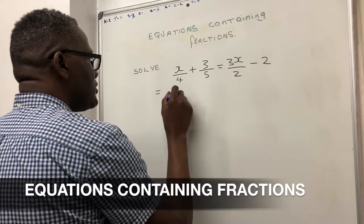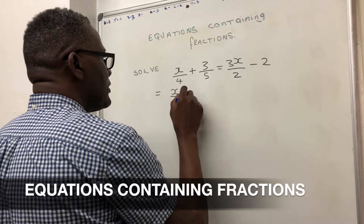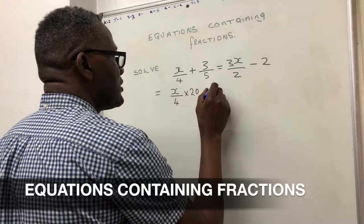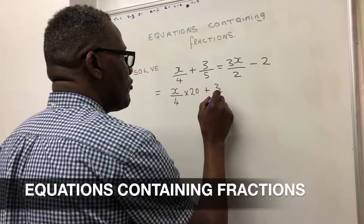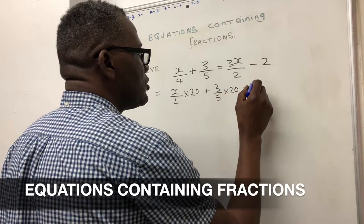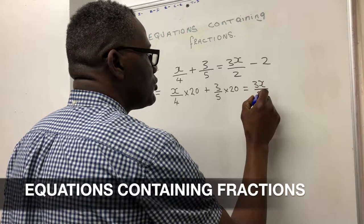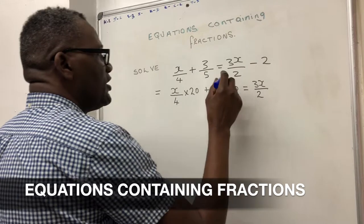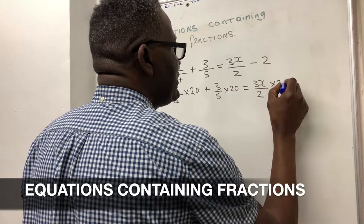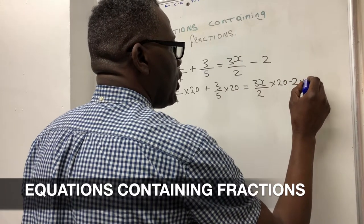So now I am going to add that into my equation: x/4 × 20 + 3/5 × 20 = 3x/2 × 20 - 2 × 20.